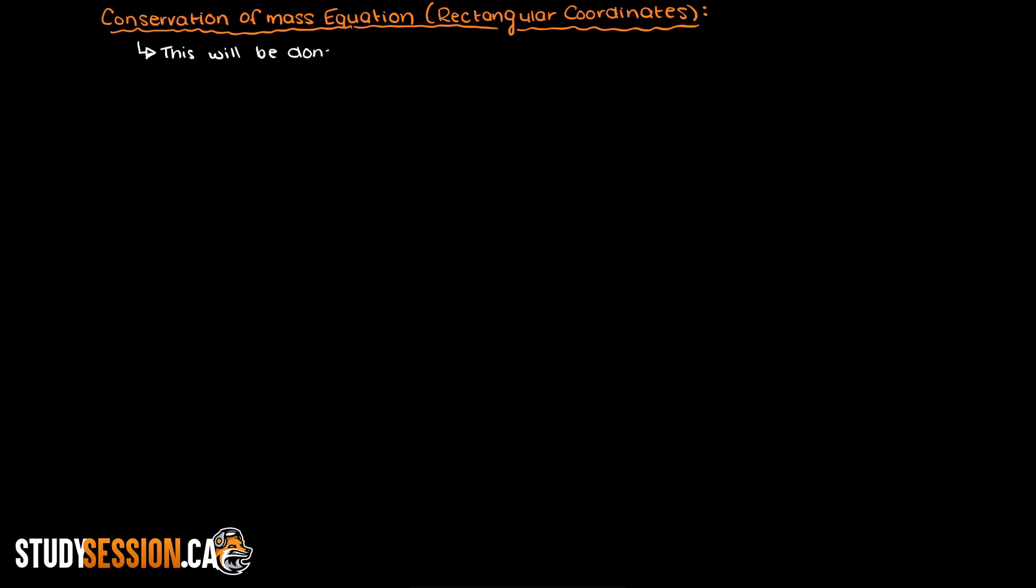We will be doing this through a Eulerian approach which means that our control volume will be at one specific position and not move, and we will view the fluids passing through our control volume. Alright, so let's get right into this derivation.